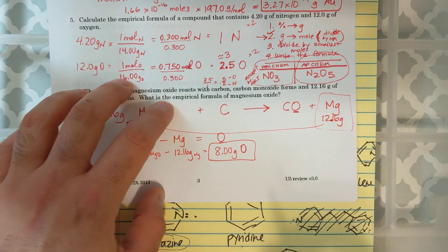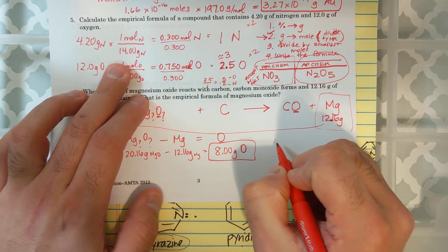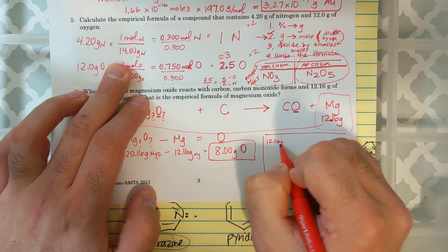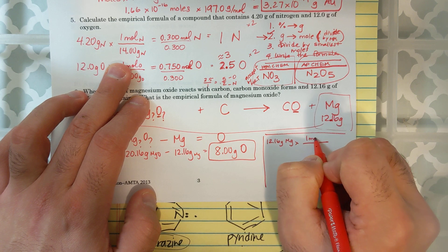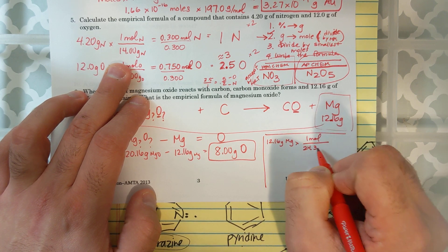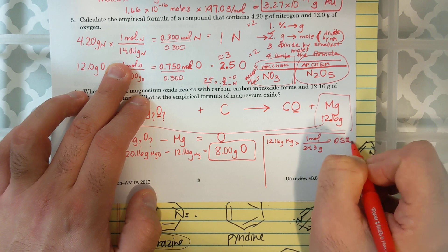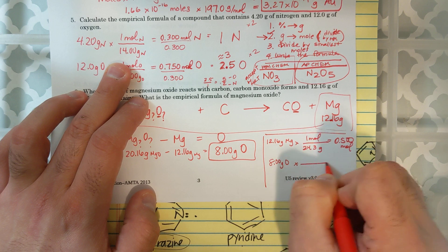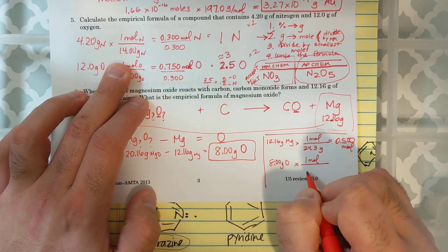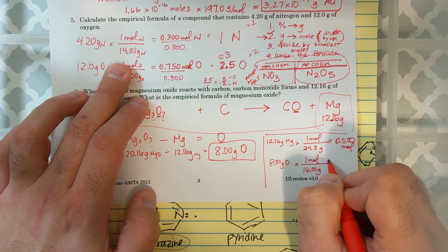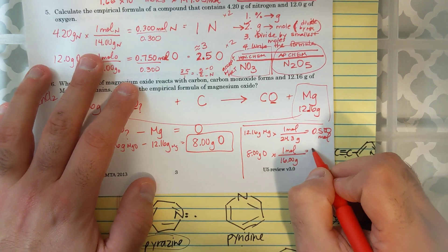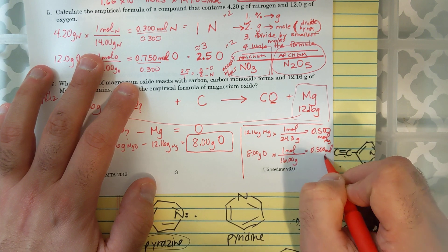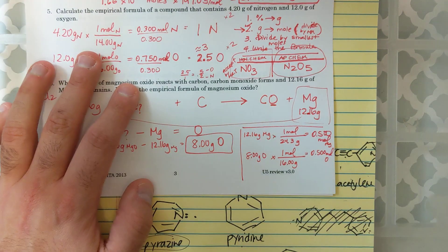I'm going to convert grams to moles now. If I have 12.16 grams of magnesium and I want to convert it to moles, I'm dividing by 24.3 grams. That's actually about 0.500 moles. And then if I have 8 grams of oxygen and I convert that to moles, it's about 16. The molar mass is about 16. I also get 0.500 moles. So, I have 0.500 moles of magnesium, 0.500 moles of oxygen.